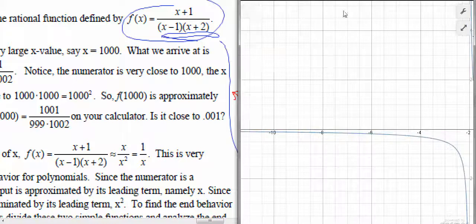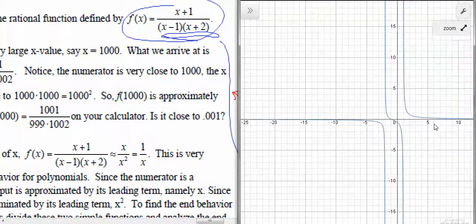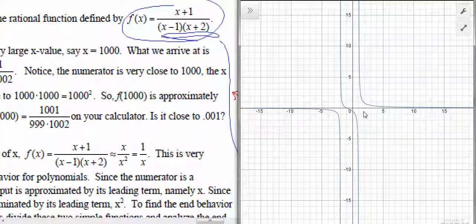So let's hide that thing, zoom out, and look, look what it does. I don't really care what it does in the middle, although, to be honest with you, I did predict that there's going to be a vertical asymptote over here at negative 2 and over here at positive 1, and that's where they are.